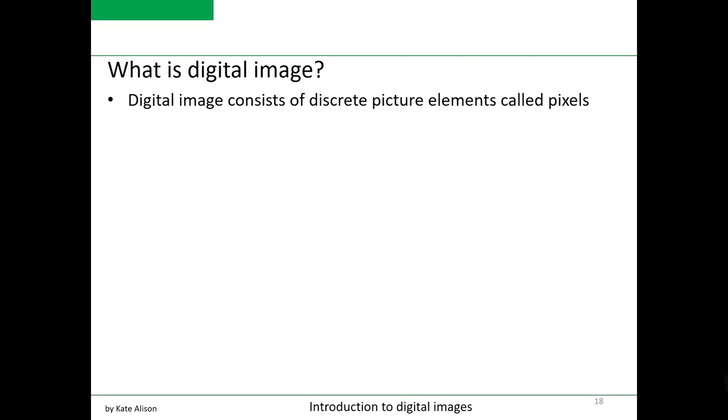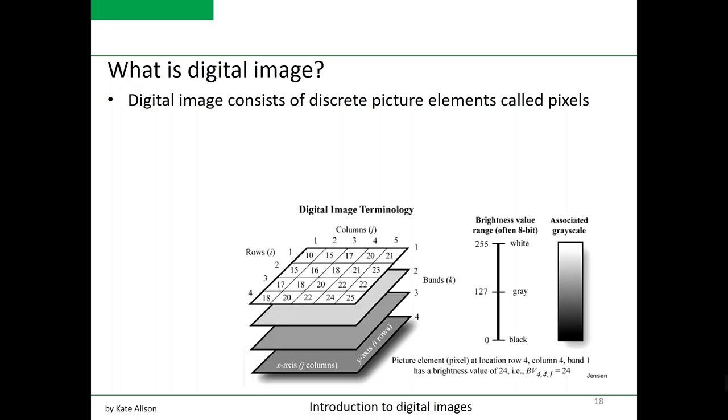What is a digital image? A digital image consists of discrete picture elements called pixels.